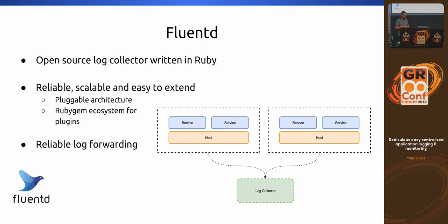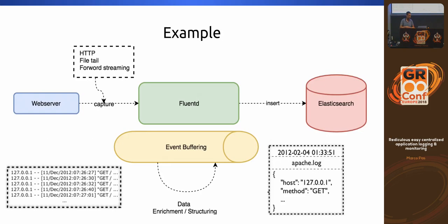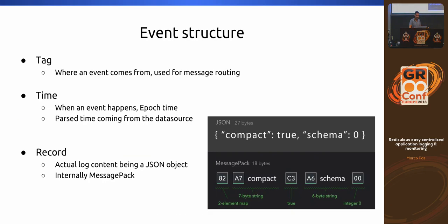Fluentd is an open source Ruby implementation — don't get scared, we're at a Grails or Java conference but Ruby shouldn't mean slow. Actually Fluentd is one of the fastest implementations you can get because the fast parts are written in C. It has a pluggable architecture so you can get all kinds of plugins from the internet. In an example: data comes from a web server writing to standard out, goes into Fluentd, and Fluentd stores it in Elasticsearch.